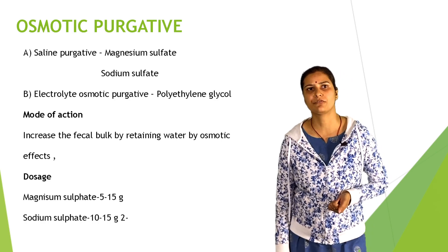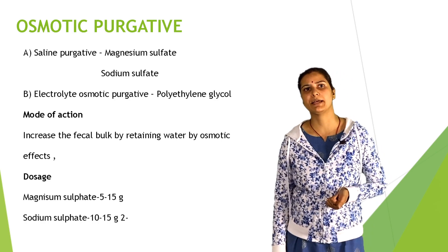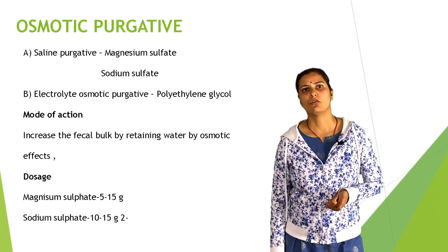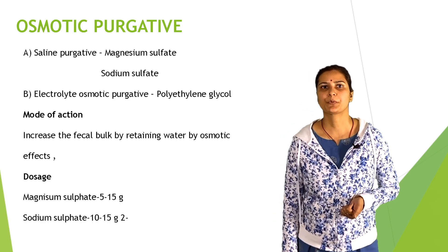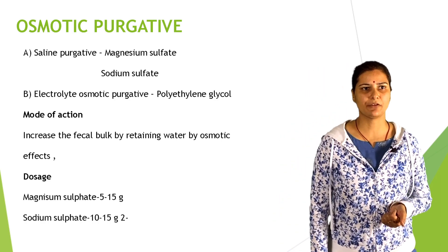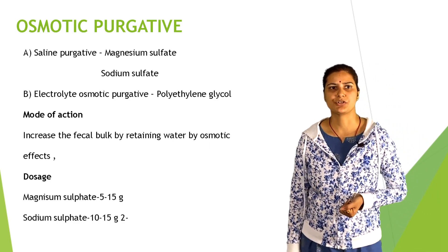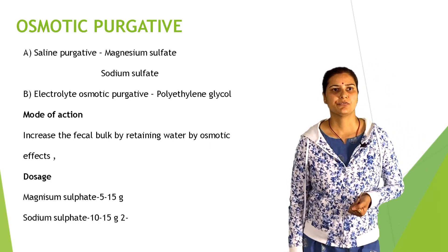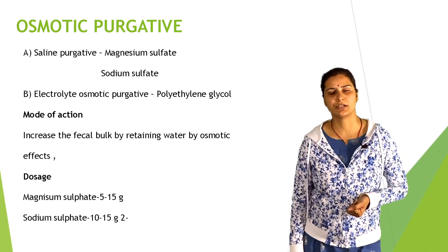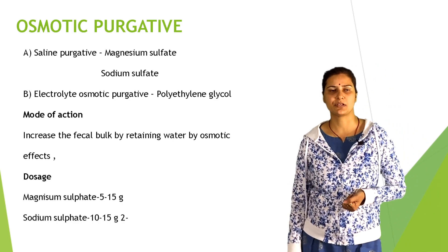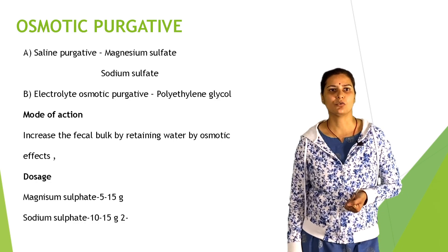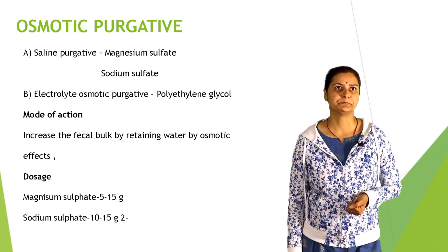Mode of action of osmotic purgatives: increase fecal bulk by retaining water through osmotic effect. Doses: magnesium sulfate 5 to 15 grams; sodium sulfate 10 to 15 grams.